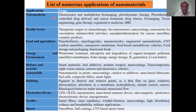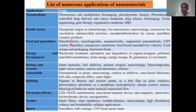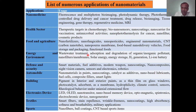In summary, the numerous applications of nanomaterials span many sectors. In nanomedicine: fluorescence, multiphoton bioimaging, photodynamic therapy, bioimaging, tissue engineering, gene therapy, regenerative medicine, and MRI. In food and agriculture: nanofertilizers, nanofungicides, and nanopesticides — a small amount of nanopesticide is sufficient to kill pests, so we don't need large quantities. In energy and environment: wastewater treatment, absorption and degradation of organic and inorganic pollutants, nanofilters, solar energy, energy storage, and hydrogen generation.